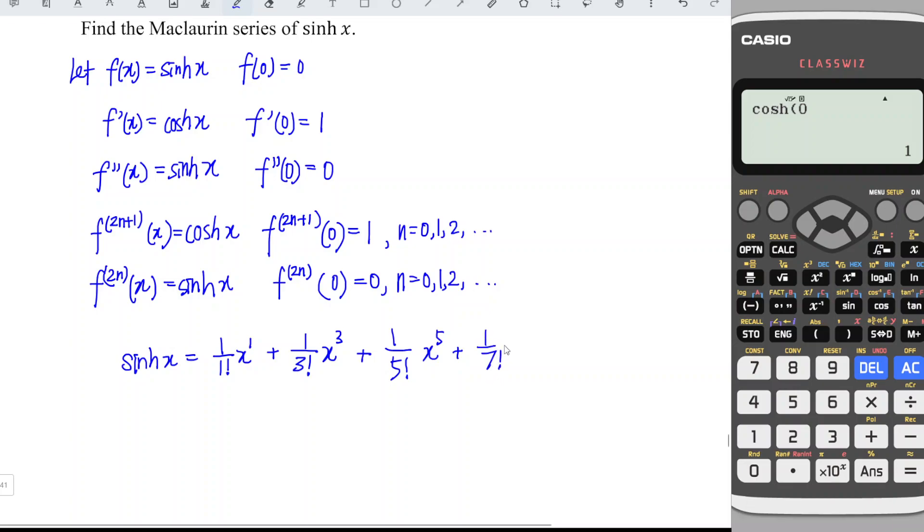And the next derivative we have is 7. As long as odd number should be 1, 3, 5, 7, and so on. Since odd number, we have 1. Even number, we have 0. So 0 can be eliminated, can be ignored, and so on. So depends on the question, how many terms we need. Then we write for how many terms.